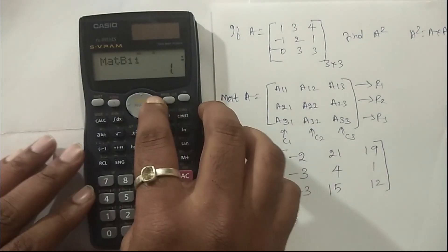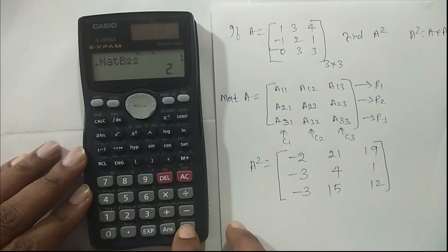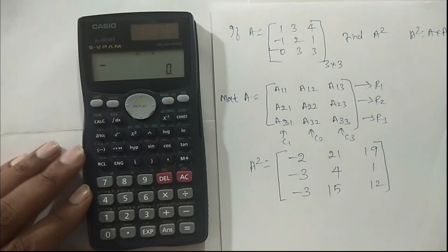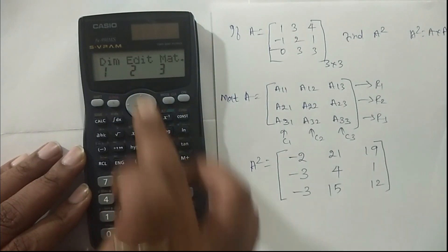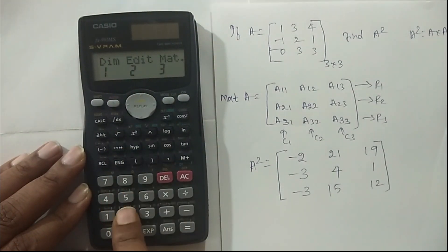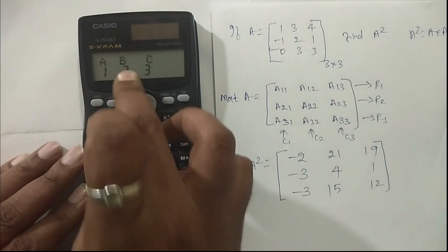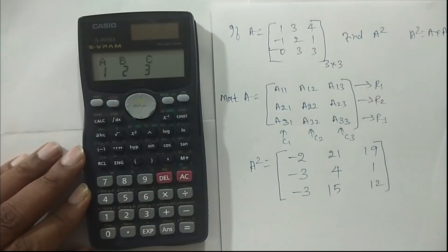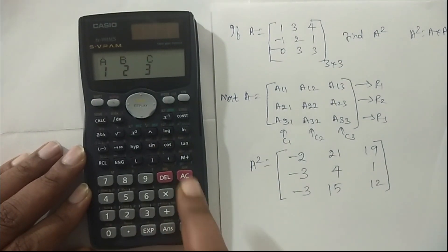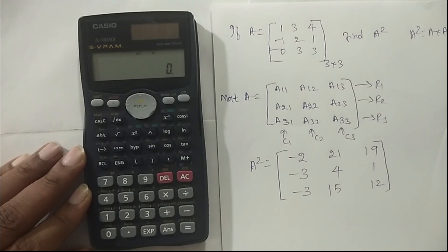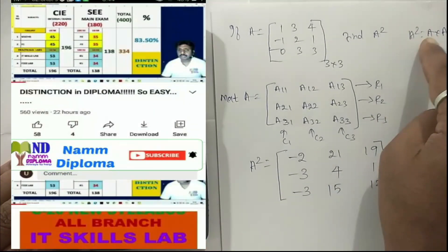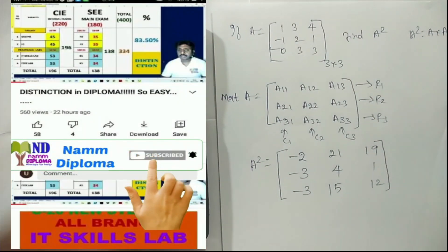Now if you want, you can check this one. If you want to check the matrix B, you can read the entered data. Now I want to multiply - I want to find matrix A into matrix B. This is mat A and this is matrix B. Now I want A square equals mat A into mat B.